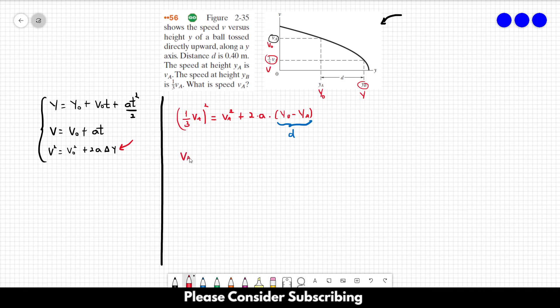Let's make some simplifications. VA squared over 9, let's pass this to the other side, minus VA squared is equal to 2 times A times D. So VA, which is what we want to know, is equal to the square root of minus 9 over 8 times 2AD.